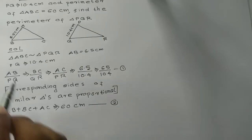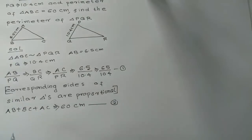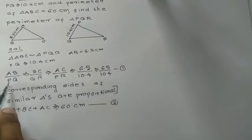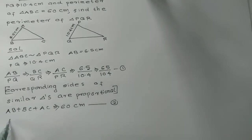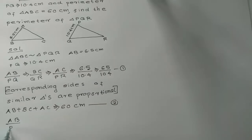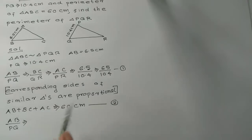Next, we write AB divided by PQ and find the value using the ratio from the given measurements.